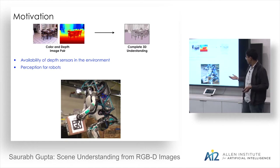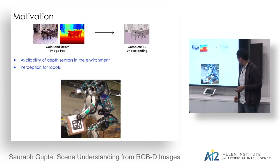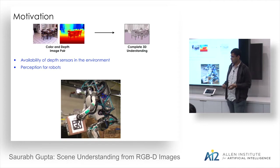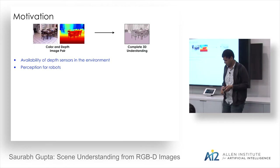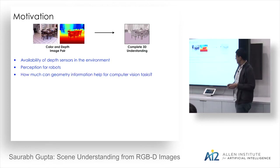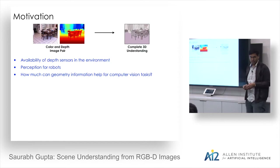This is intimately tied with perception for robots. If a robot wants to navigate and act, detailed understanding is useful for planning and executing tasks accurately. As an instance, Boston Dynamics robots currently still use QR codes for perception — we want to get rid of that limitation and enable real-world understanding. There's also the scientific question of how geometry can help computer vision tasks.